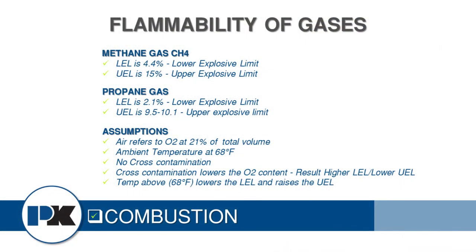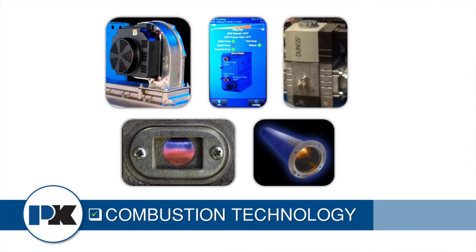In the combustion process, methane gas — which is our natural gas — has a limit of explosivity: a lower limit and an upper limit. This is necessary to understand because below or above that limit we're not going to have combustion. Today's boilers work a little bit differently than what you might be used to years ago.